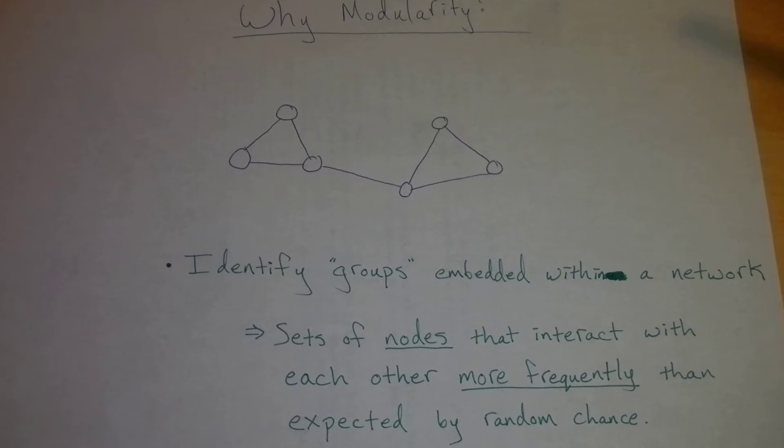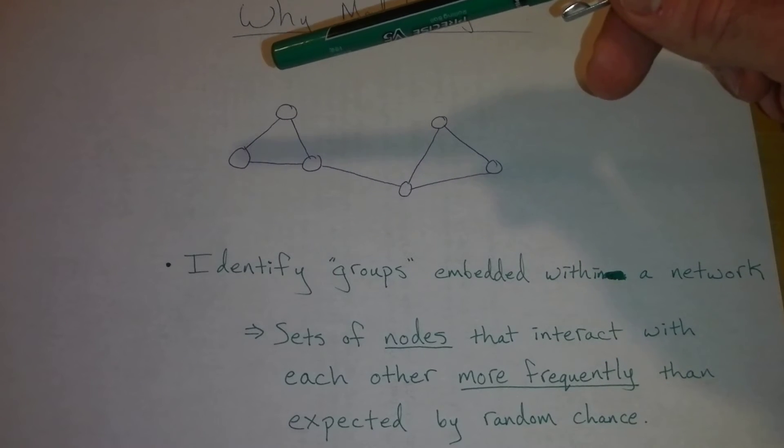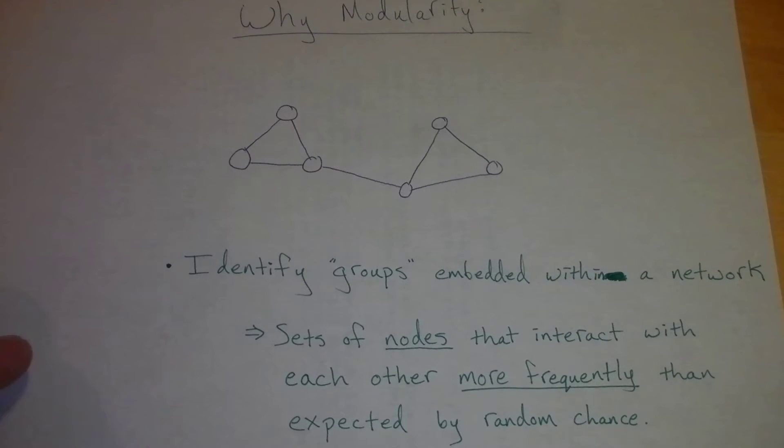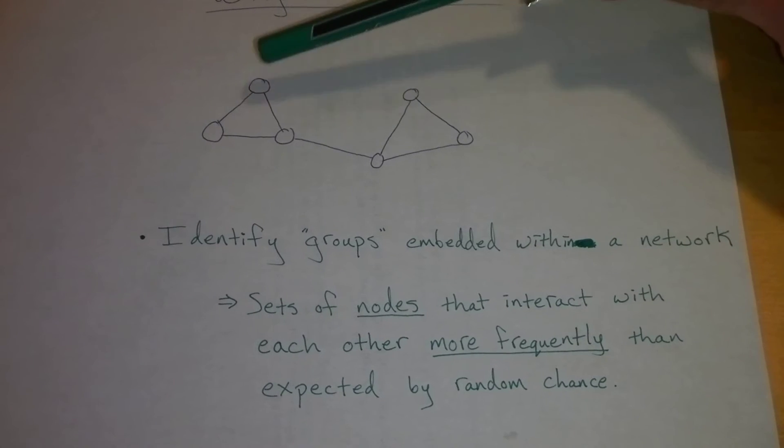Just by taking a look at this network right here, you can already kind of eyeball it and see that we've got two groupings. The verbal definition of modularity is that it looks for sets of nodes that interact with each other more frequently than expected by random chance.